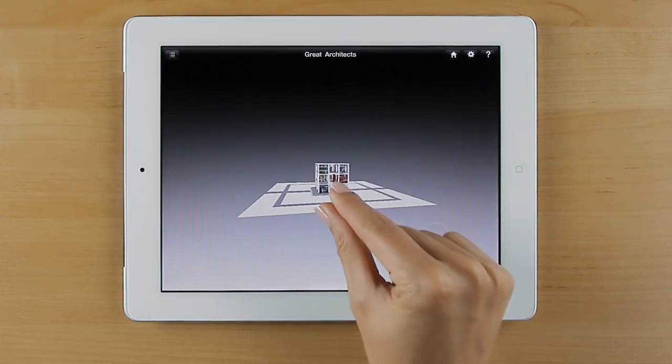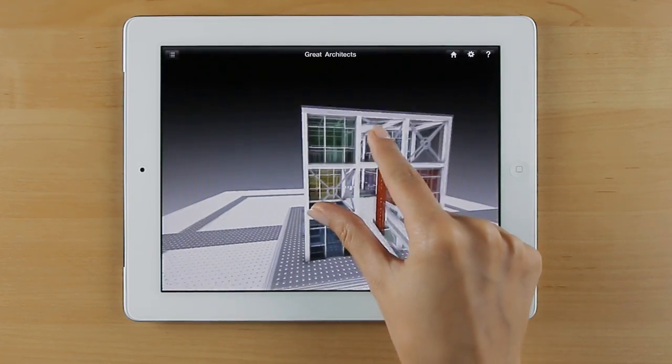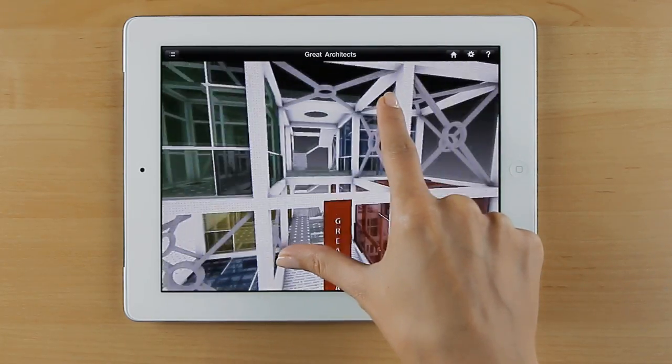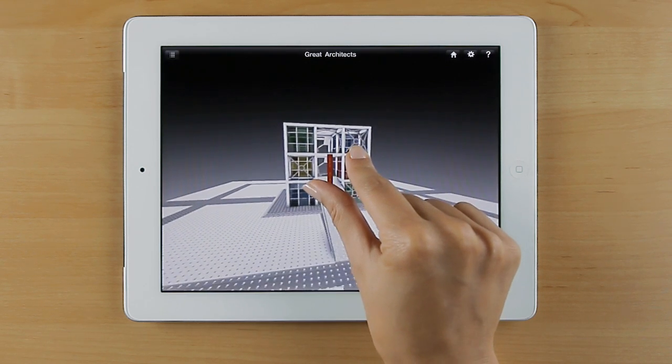For instance, using the pinch gesture to zoom in or out actually means real camera movements. In other words, true 3D navigation in the model, even for simplicity.